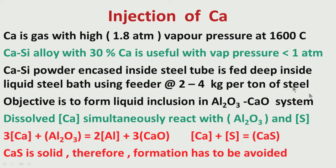The first thing we should remember is that calcium is a gas at about 1600°C in liquid steel. That means whatever calcium we inject in liquid steel, it becomes gas because the vapor pressure is relatively very high — 1.8 atmospheres. At 1 atmosphere, hardly any calcium will remain in the liquid steel. So calcium will come out in the form of vapor, and hardly any calcium will be retained in liquid steel.